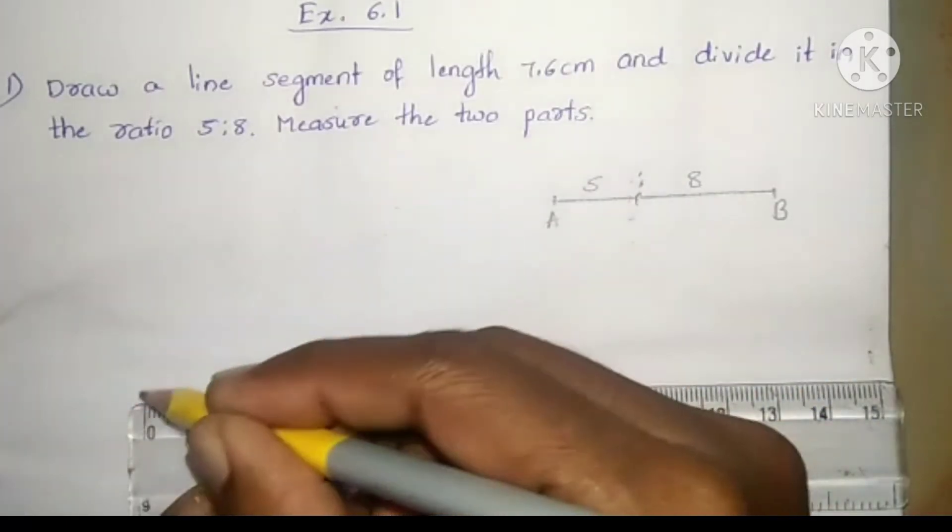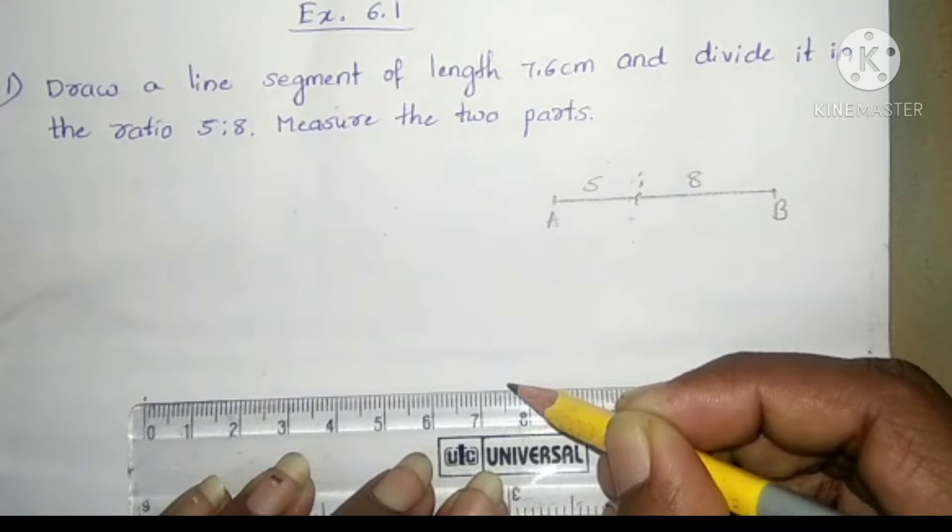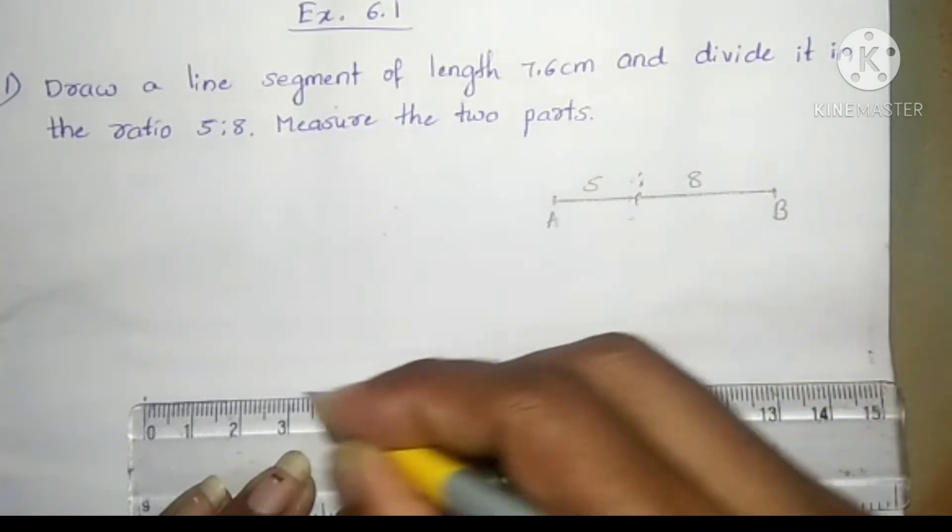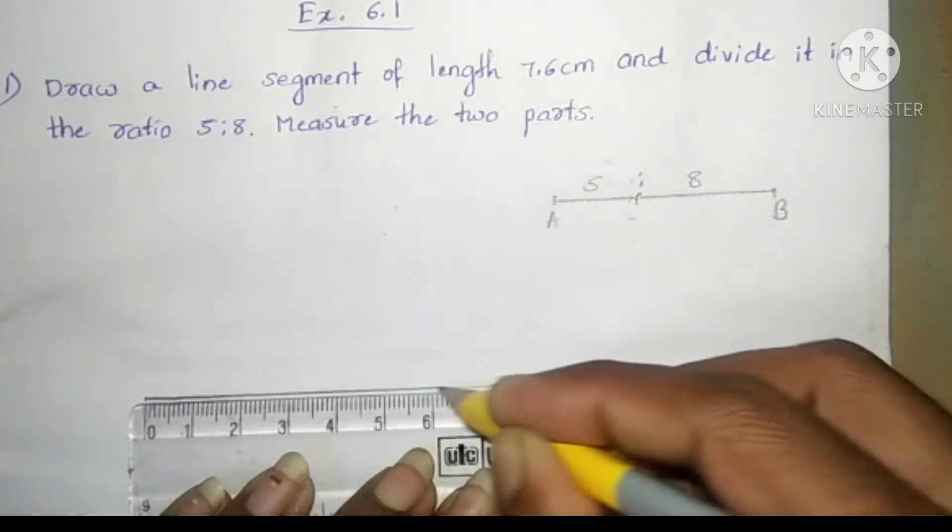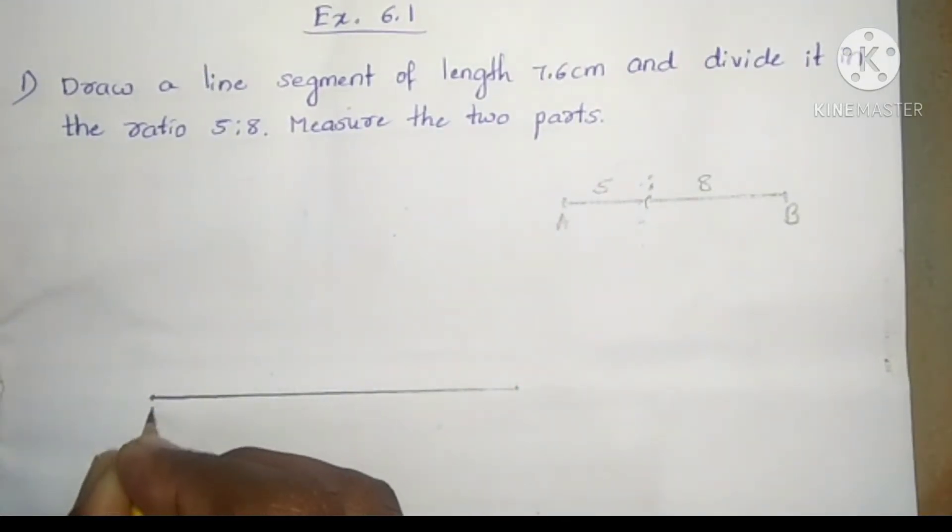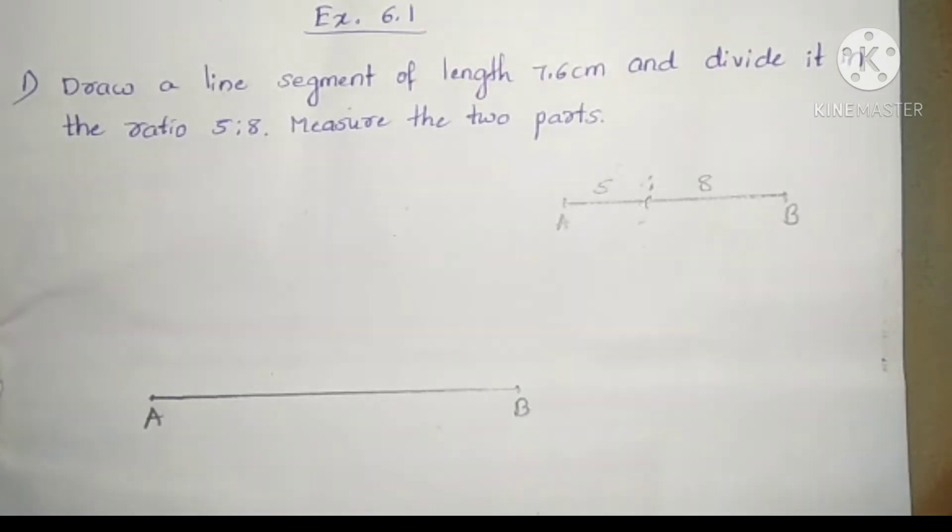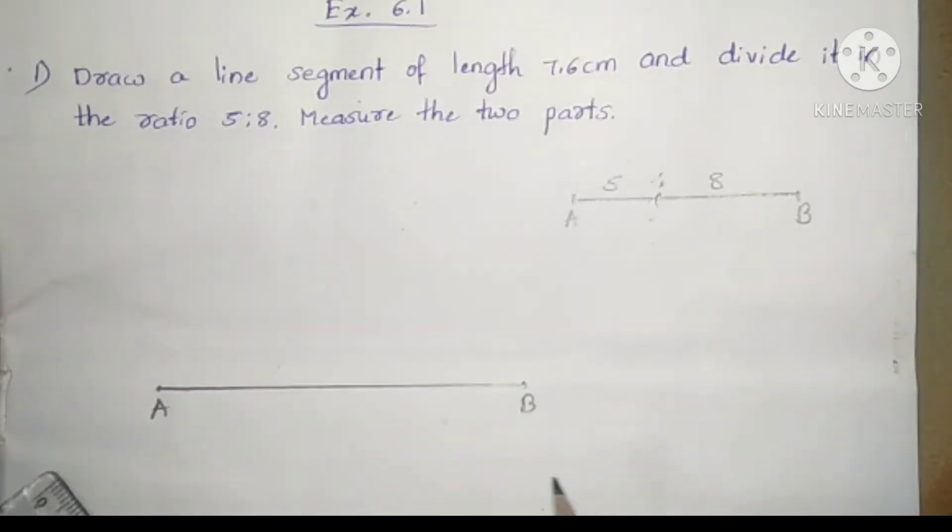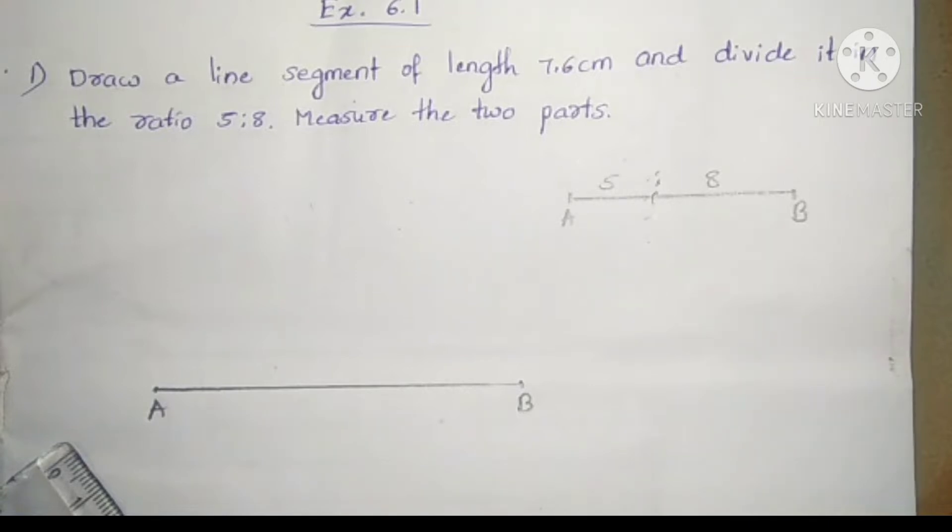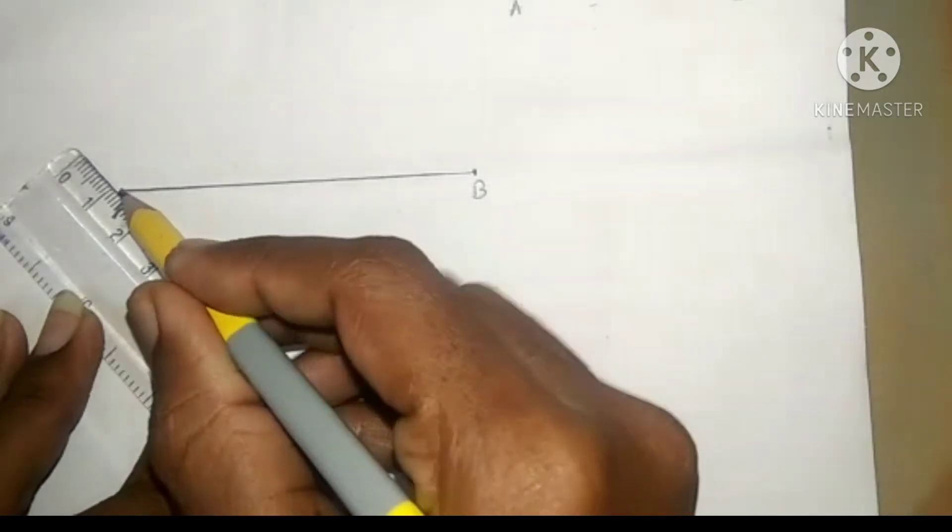Draw a line segment of length 7.6 cm. Name this line segment as AB. Make an acute angle to this line segment. Acute angle means angle less than 90 degree.